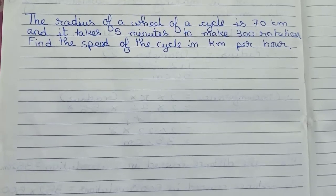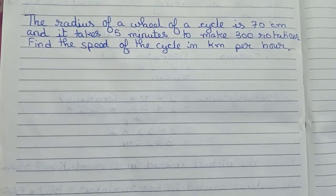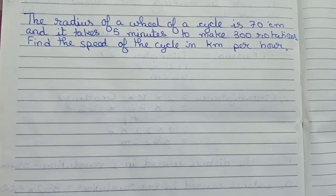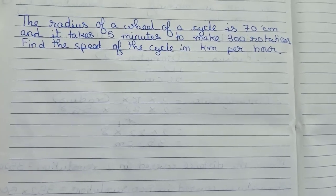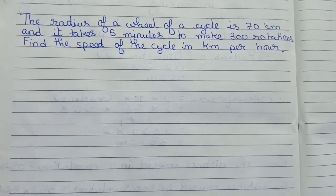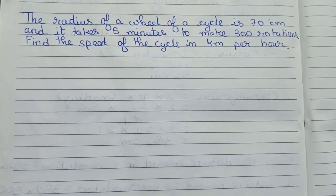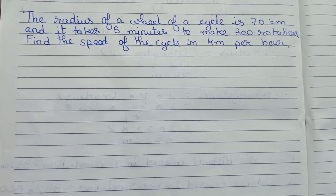Hello guys, welcome to this video. In this video, our question is: the radius of a wheel of a cycle is 70 centimeters, and it takes five minutes to make 300 rotations. Find the speed of the cycle in kilometers per hour.